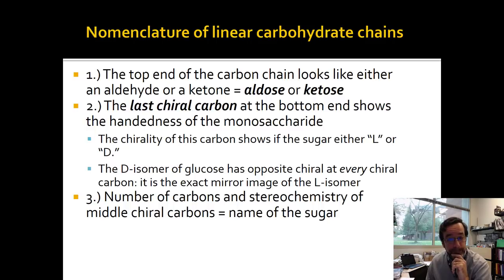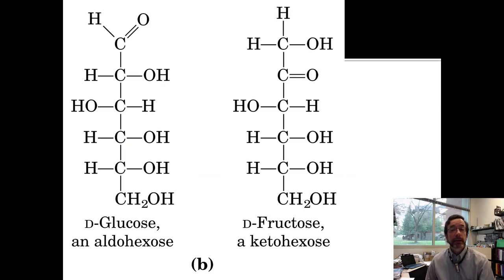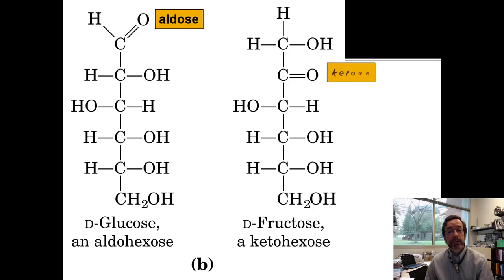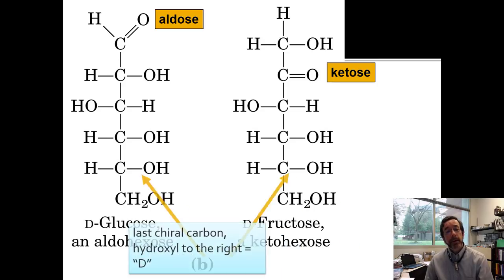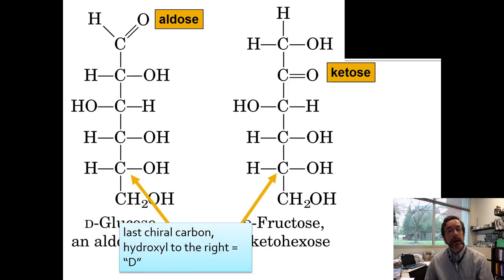You can tell whether it's a natural isomer by whether it has the OH to the right or to the left. The number of carbons and the stereochemistry of the middle chiral carbons determine the name of the sugar. The most important sugar is probably glucose — it has an aldehyde at one end, so we number it from that end and call it an aldose. Fructose is very similar but has a ketone at one end, making it a ketose. Aldehydes are more reactive, so glucose is a little more reactive than fructose.